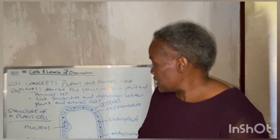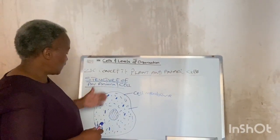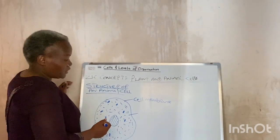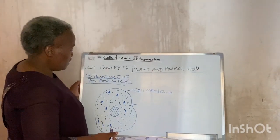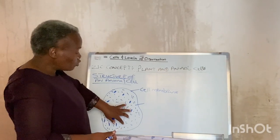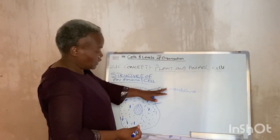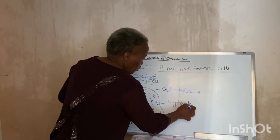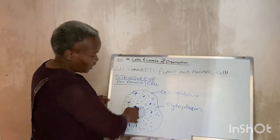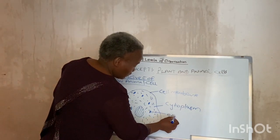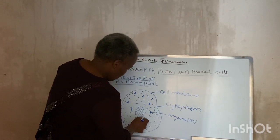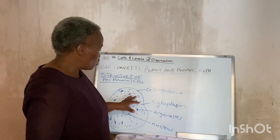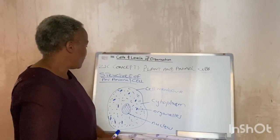Now we want to look at the structure of an animal cell. The shape of an animal cell is irregular. It consists of a cell membrane — a thin layer which surrounds the cytoplasm, holding the contents of the cell together — and it is also living. It has cytoplasm, which is jelly-like, where all the chemical reactions in a cell take place. It also has organelles, and the nucleus, which is the control center containing the genetic information that controls all the activities of the cell.